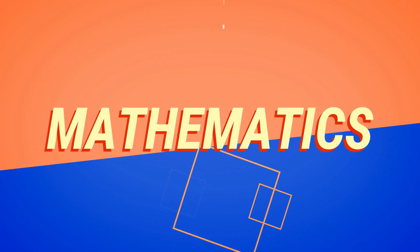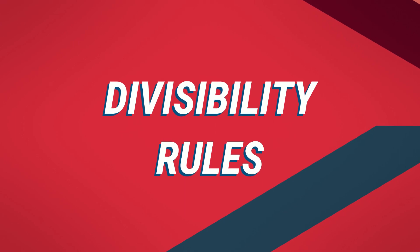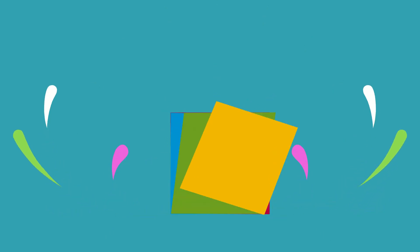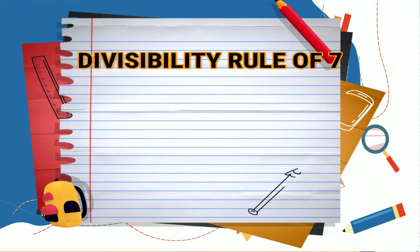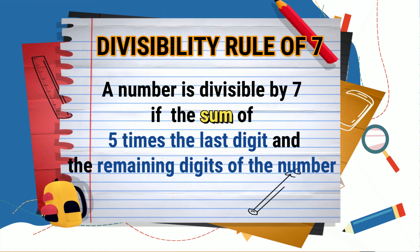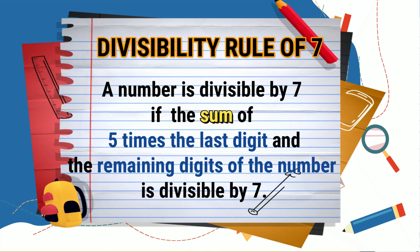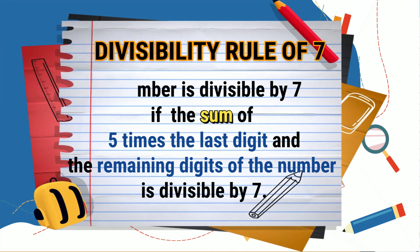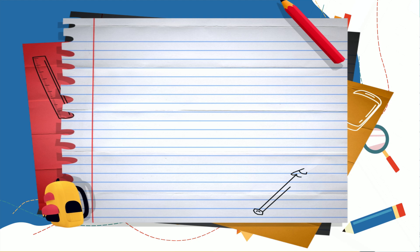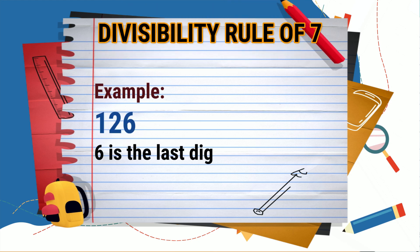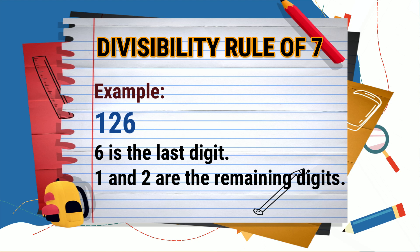Hi everyone, welcome back to our channel. This is the third part of our video lesson about divisibility rules. The seventh rule is the divisibility rule of seven: a number is divisible by seven if the sum of five times the last digit and the remaining digits of the number is divisible by seven. Let's have this example: 126.